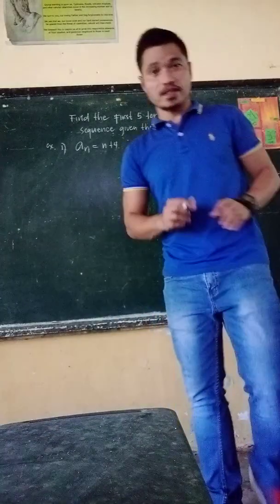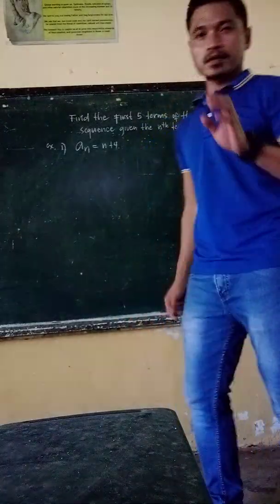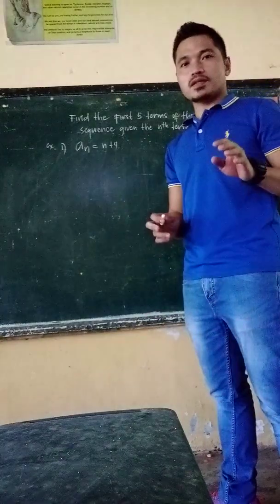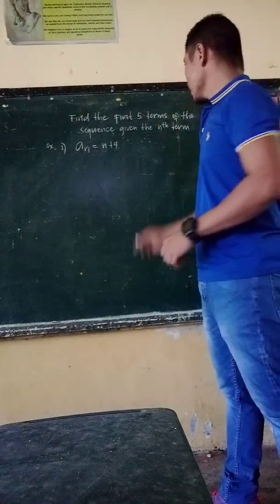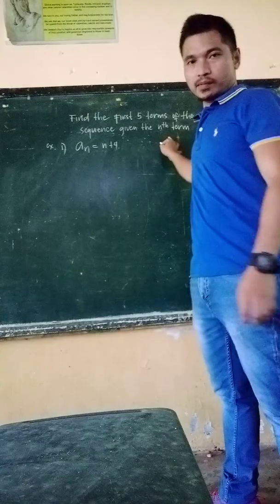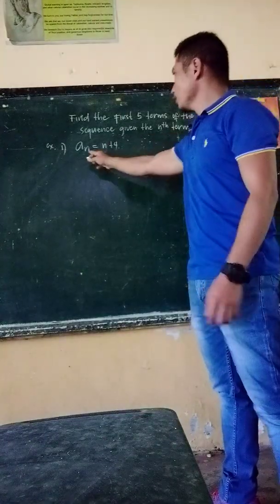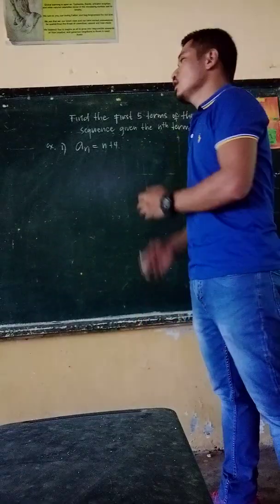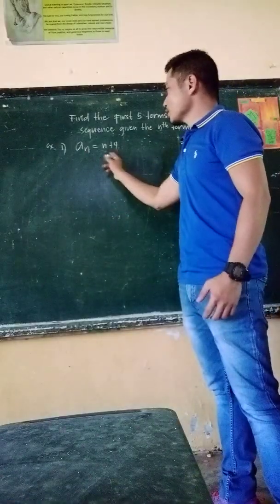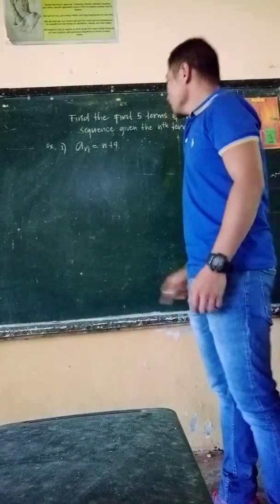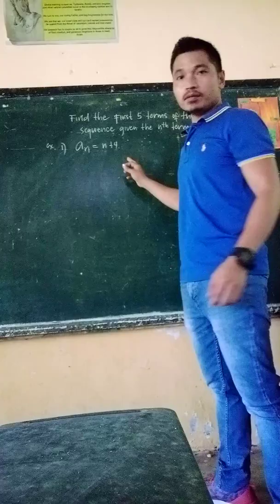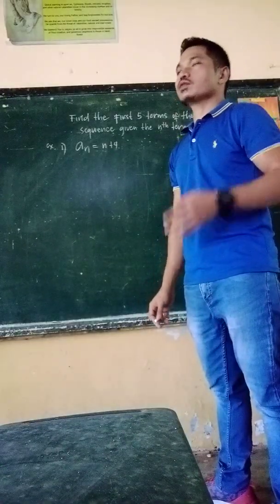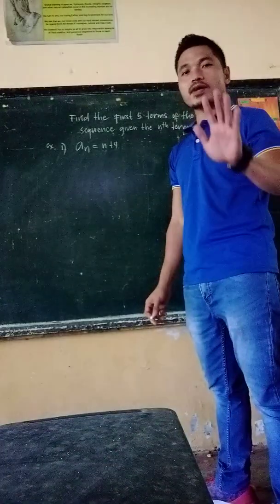So what do we mean? We are here talking about finding the first n terms of a given nth term. Meaning you have to find the first 5 terms of the given nth term. For example, you have a sub n equals n plus 4, and we have to find 5 terms.